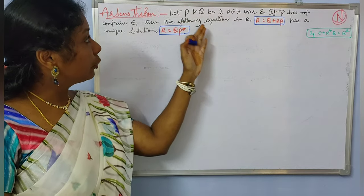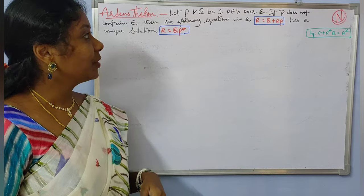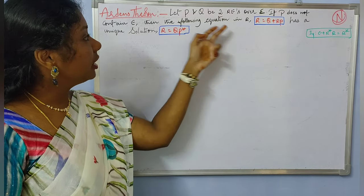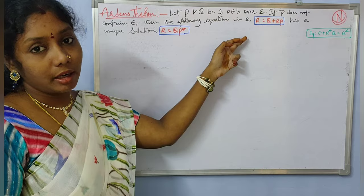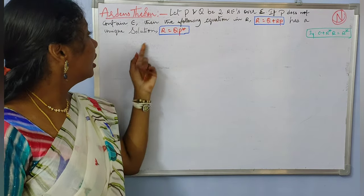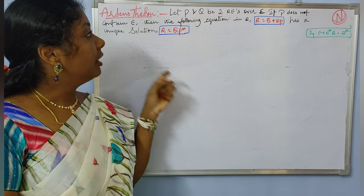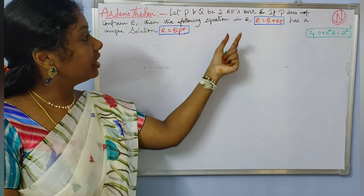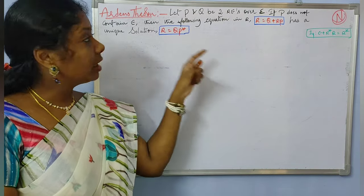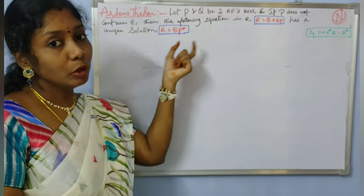Let P and Q be two regular expressions over the input alphabet sigma, and if P does not contain epsilon, then the following equation in R — that is, R is equal to Q plus RP — has a unique solution, that is R is equal to QP star. Whenever you are getting the equation of the form R equals Q plus RP, that equation has a unique solution of the form R equals QP star.